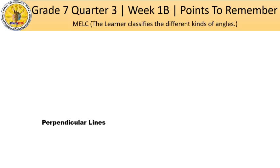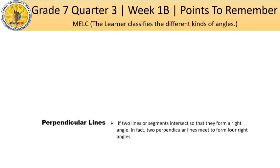We also have what we call perpendicular lines. We say two lines or segments are perpendicular if they intersect so that they form a right angle, which measures 90 degrees. In fact, two perpendicular lines meet to form four right angles. This is an example of a perpendicular line with the symbol of a right angle — if you see that symbol, it indicates a right angle.